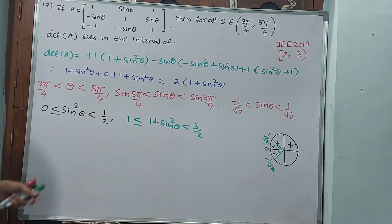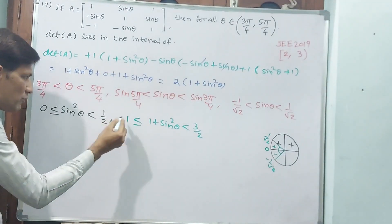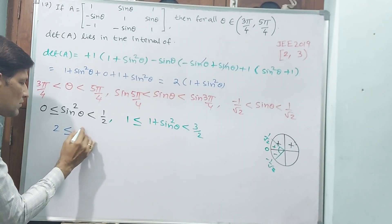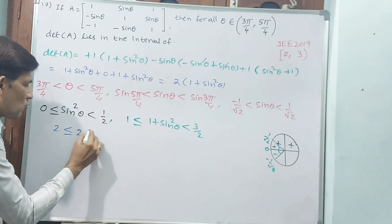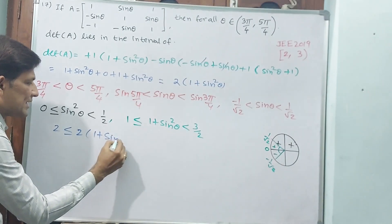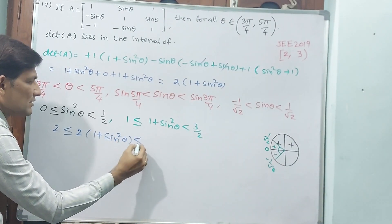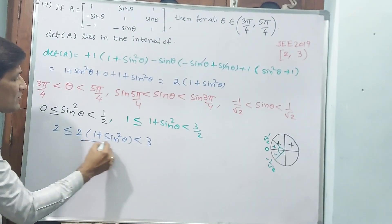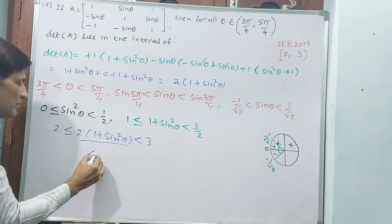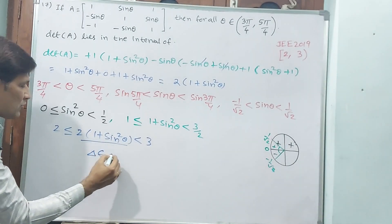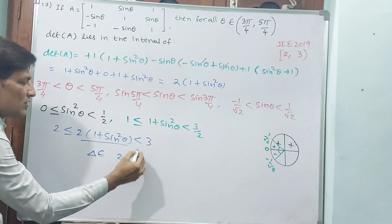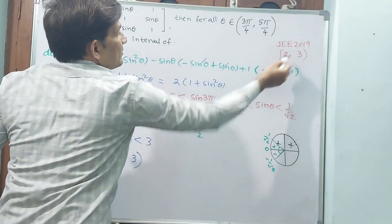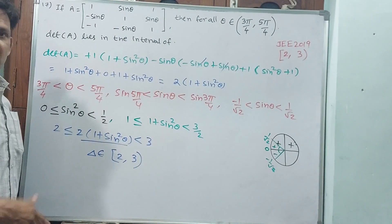Now multiply by 2: 2(1 + sin²θ) gives values from 2·1 = 2 to 2·(3/2) = 3. The interval is [2, 3) — two is closed interval, three is open interval. So the determinant A belongs to [2, 3). Let us go to the next question.